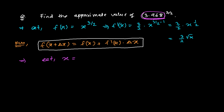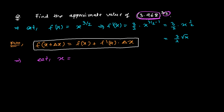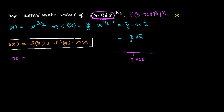We need to cancel out the power 3/2, and this can be done if we find a value of x that is a perfect square number and very close to 3.968. The trouble is the 1/2 power — to remove it we need a perfect square. So we search for a perfect square number very close to 3.968.